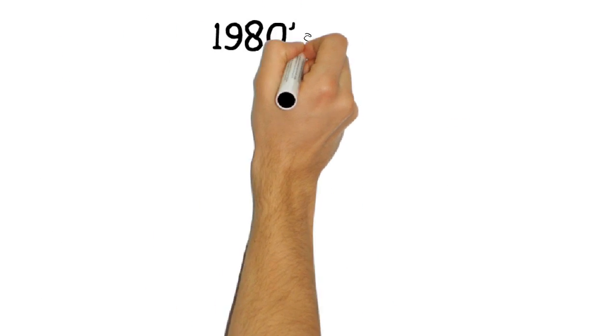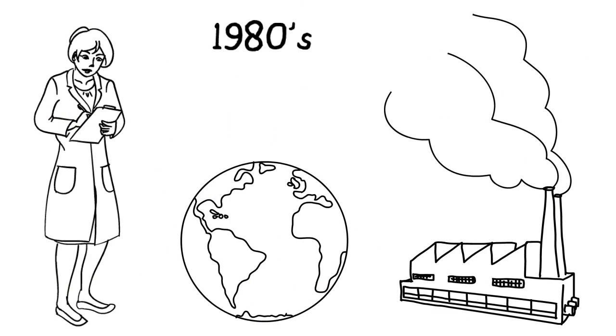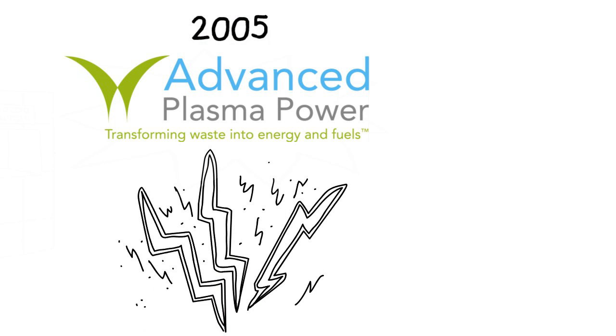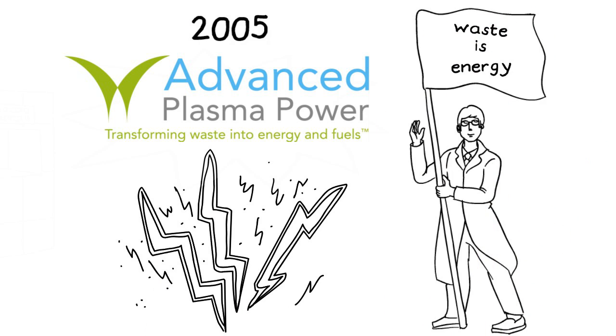By the 1980s, scientists began to notice that burning fossil fuels was contributing to potentially catastrophic global climate change, and we decided there had to be a better way. So in 2005, APP evolved from Tetronics to revolutionize the sustainable treatment of waste with its gas plasma technology.